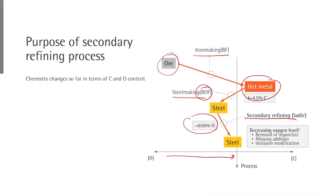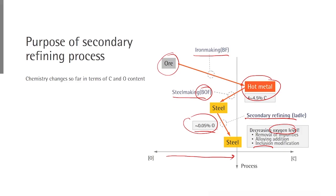The purpose of the secondary refining process is first to decrease the oxygen concentration, which has increased to typically 500 to 600 ppm. During this process, we encounter a new material called inclusions, which are small particles of oxide that must be decreased or modified. We also need to remove other impurities and adjust the chemical composition of liquid steel by adding alloying elements.